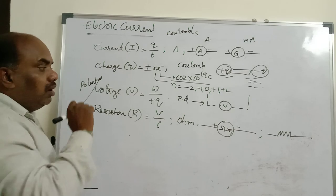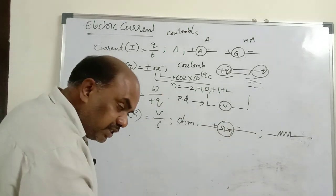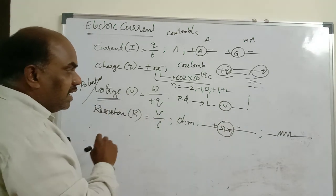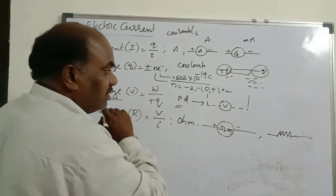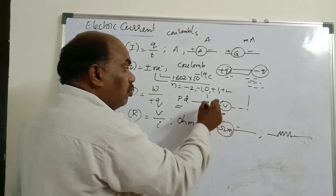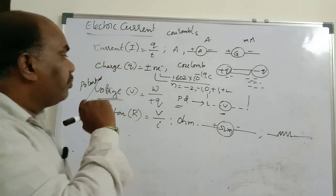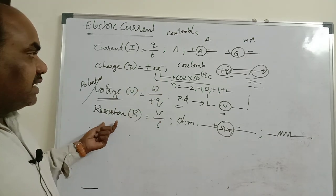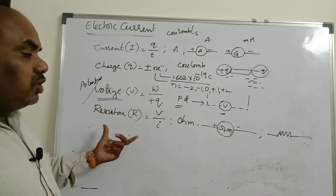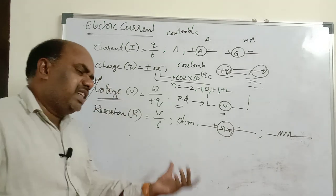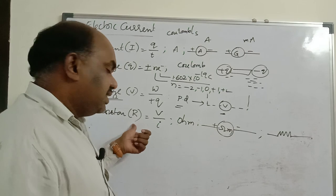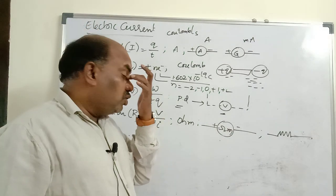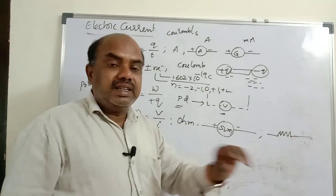Next: potential means the work done by the cell to bring one unit positive charge from infinity to the consumer. Potential we cannot measure; we can measure only potential difference, with a voltmeter connected in parallel. Formula: V = W/Q. Resistance is the opposition of free flow of electrons. R = V/I, unit is ohm. Ohmmeter is used to measure resistance.